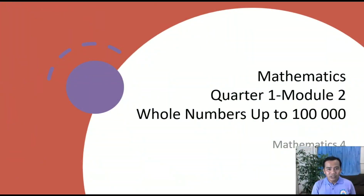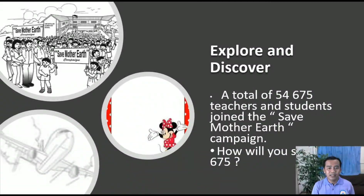Today we are on Quarter 1, Module 2: reading and writing numbers up to 100,000. Let's explore and discover. A total of 54,675 teachers and students joined the Save Mother Earth campaign. How will you show 54,675?